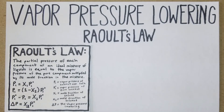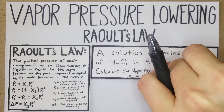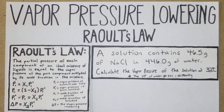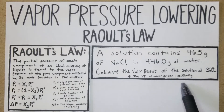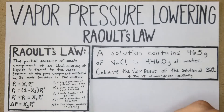Problem 1: A solution contains 46.5 grams of NaCl and 446 grams of water. Calculate the vapor pressure of the solution at 32 degrees Celsius. The vapor pressure of water at 32 degrees Celsius is given as 35.7 millimeters of mercury.